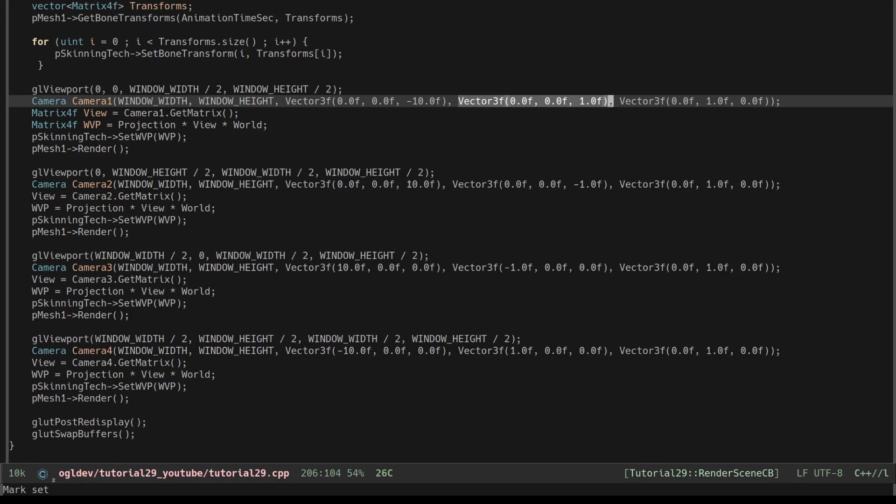The first camera is located at minus 10 on the z axis, and the target vector is the positive z axis. The second camera is exactly the opposite: 10 on the z axis, and the target vector is the negative z axis. We also have a camera on the left and a camera on the right. From each camera we extract the view matrix, recalculate the WVP matrix, and set it into the vertex shader. We can now render the object and it will end up in the rectangle that was configured in the most recent call to glViewport.